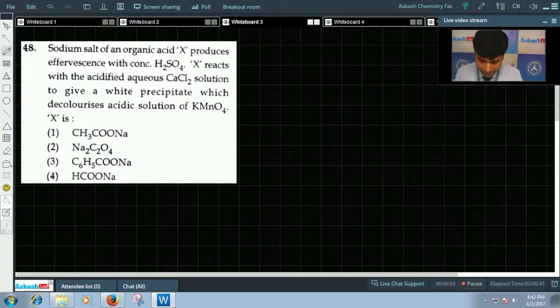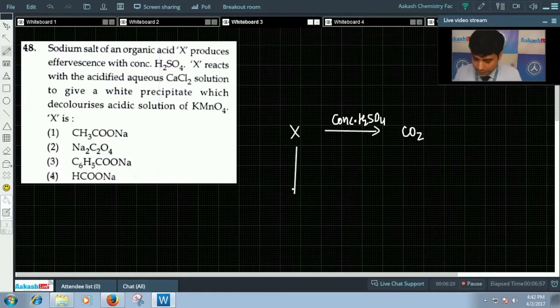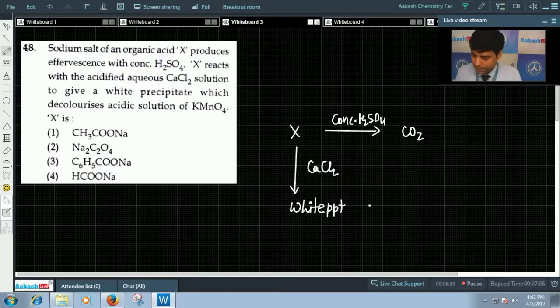I am writing this: X gives you effervescence, that means it is giving you carbon dioxide. Then X when reacts with aqueous CaCl2 gives you white precipitate, and this white precipitate decolorizes KMnO4 solution.